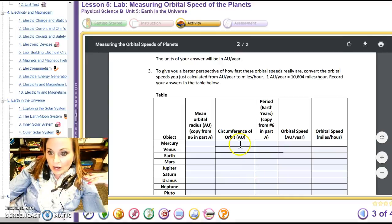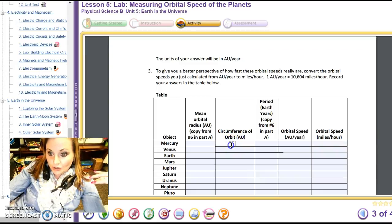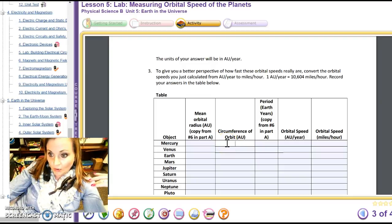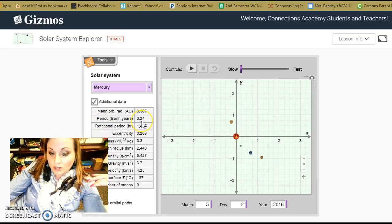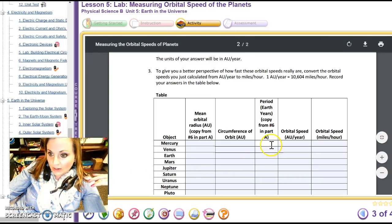Then it says circumference. Well we got the radius right, and circumference is 2 pi r. So I gotta do a little calculation here. 2 times pi times the radius in AU. Then it says get the period from number six. Well let's go back and look at our gizmo. Rotational period, no that's not what we need. We need an orbital period. Oh here we go. 0.24 years. That's what we need. So we're going to put that down in here. 0.24 years.